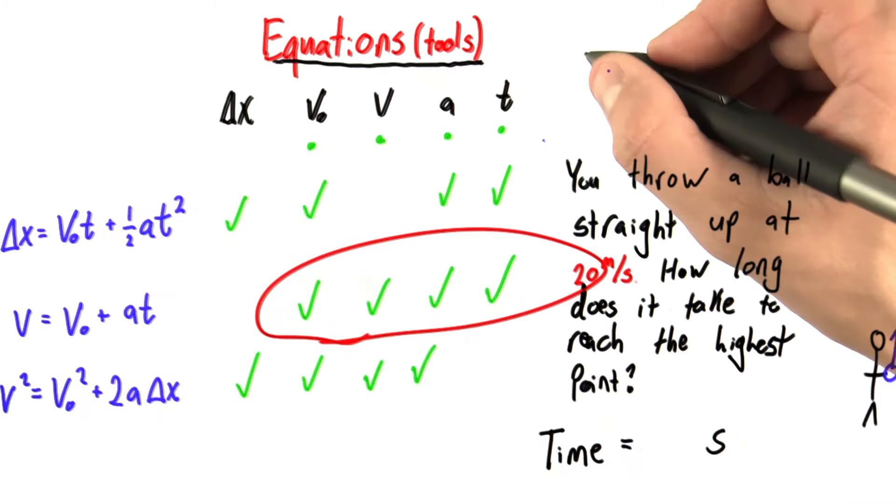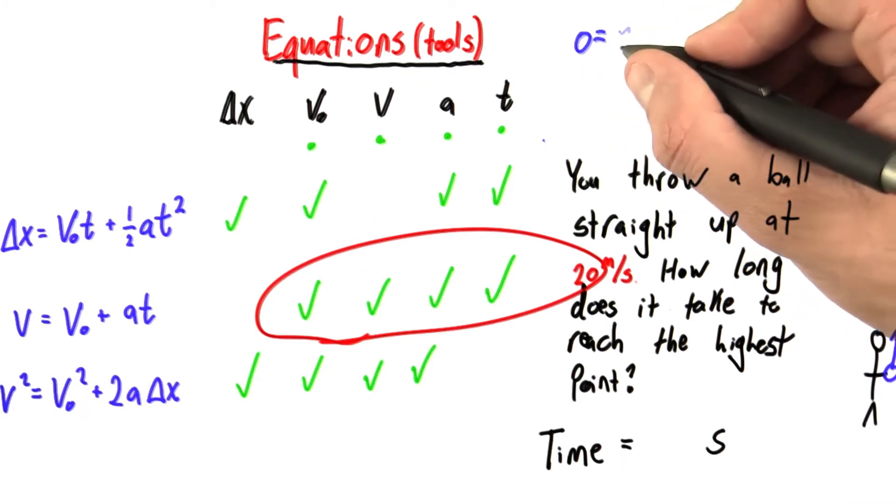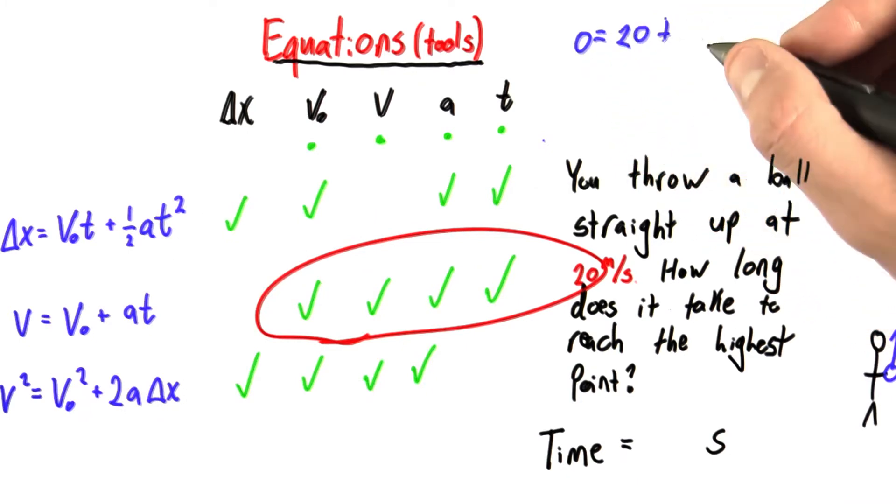Plugging in, my velocity at the top is 0. My initial velocity is 20, plus my acceleration, which is negative 10 times time.